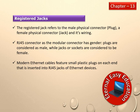Modern Ethernet cable features small plastic plugs on each end that are inserted into RJ45 jacks of an Ethernet device. For example, in a computer lab or office, all devices are connected with a blue color cable. The end of a cable is referred to as the RJ45 Jack — and since it is termed a Jack, it is female.